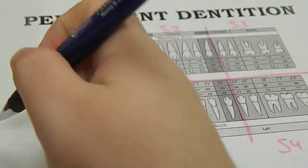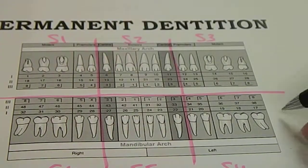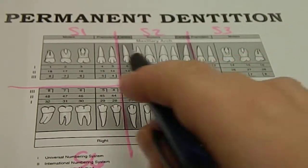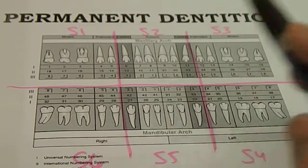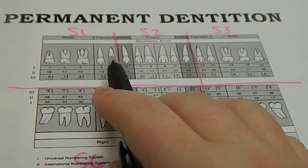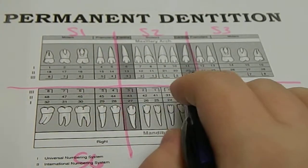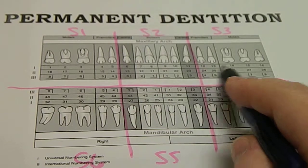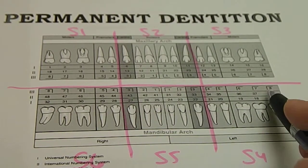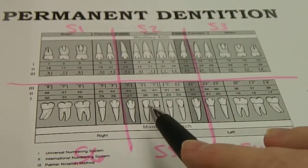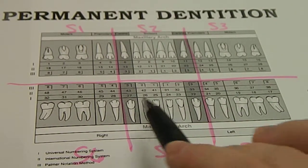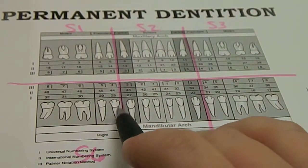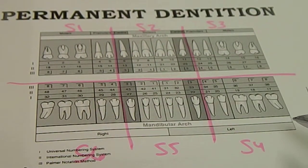We label right to left and then left to right, just like quadrants. Sextants one, two, three, four, five, six: molars through premolars is sextant one, canine to canine is sextant two, and premolar to molar is sextant three. Same on the bottom: molar to premolar is sextant four, canine to canine is sextant five, premolar to molar is sextant six.